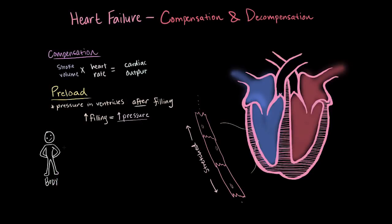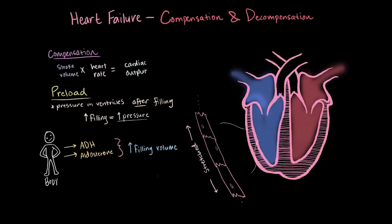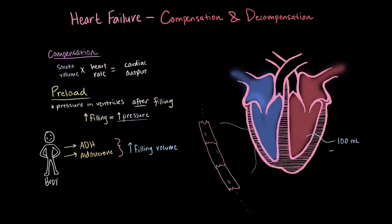To do this, to fill more, to get more blood in those ventricles, your body releases these specific hormones like anti-diuretic hormone, or we call it ADH sometimes, or aldosterone, to increase this filling volume. So if the ventricles used to have about 100 milliliters at the end of diastole, now maybe they have a little more, like 115 milliliters.